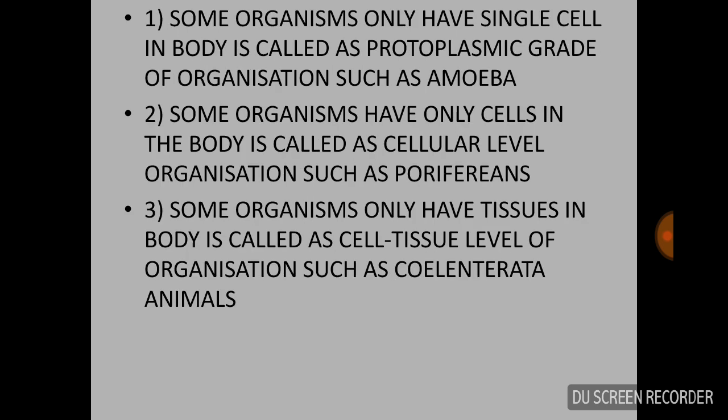There are five levels of grades of body organization. First level: some animals have only one cell in their body. This is called protoplasmic grade of organization, such as Amoeba. Second level: some organisms only have cells in the body but no tissues, no organs, and no organ systems. This is called cellular grade of organization.